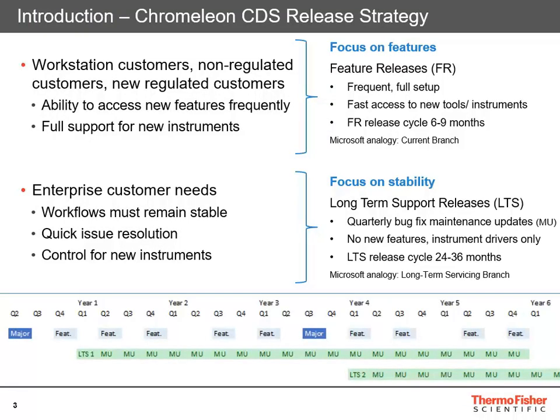To make that a bit more graphical: every two to three years we have a major release, and then there will be feature releases in between every six to nine months, so you get a regular update on new features and instruments. Coordinating with each major release is a long-term support release. Those sit stably and have regular maintenance updates. Long-term support releases are issued every two to three years in coordination with the major releases.